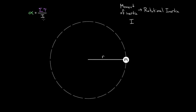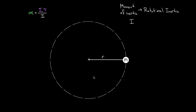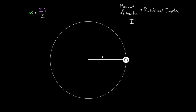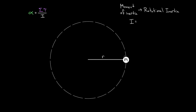So moment of inertia serves the same role that mass did — it's the inertia term for angular acceleration. We figured out how to determine the moment of inertia for a point mass. By point mass I just mean a mass you could treat as if all the mass were rotating at the same distance from the axis. For such a case, the moment of inertia is simply the mass times how far that mass is from the axis squared: I = mr².